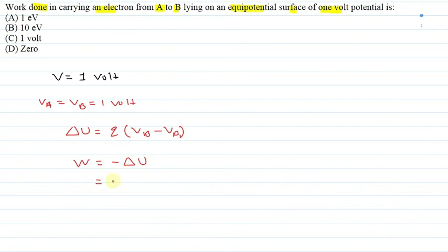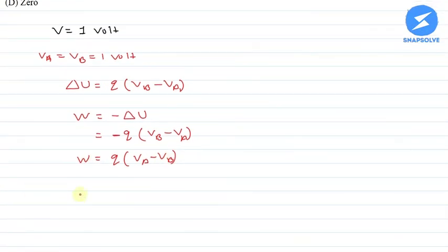So by using this, minus Q multiplied by VB minus VA is equal to work done. By solving this, VA minus VB equals the work done.